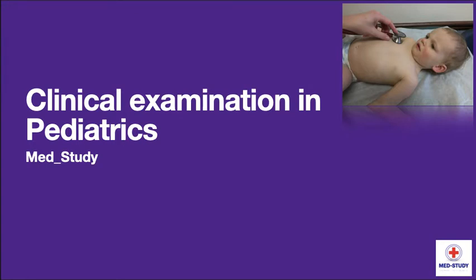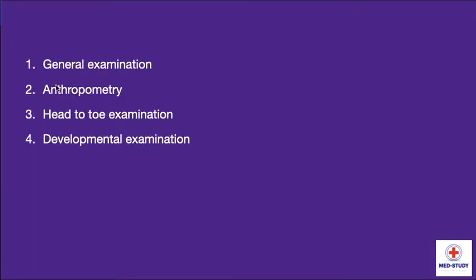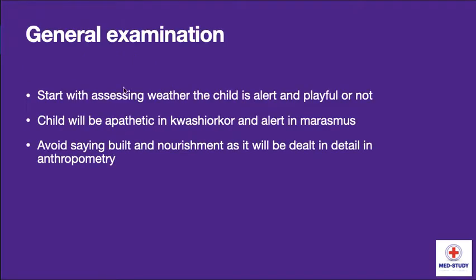Welcome to our channel Med Study. Today in this video we are going to see about clinical examination in pediatrics. I have divided clinical examination in pediatrics into four parts: first is general examination, second is anthropometry, third is head-to-toe examination, and fourth is developmental examination. Coming to general examination, start with assessing whether the child is alert and playful or not. The child will be apathetic in Kwashiorkor and alert in Marasmus. Avoid assessing built and nourishment here as it will be dealt in detail in anthropometry.